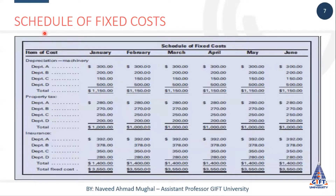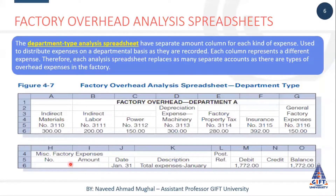This is a format for a factory overhead analysis sheet of department - is ko hum department wise create karte hain. Hum ne ek baat ki thi schedule of fixed cost. Kuch cost jo hoti hain jo ke hamari fixed cost hoti hain aur other factory overheads hoti hain, woh ya to invoices se aate hain, ya phir hum log usko fixed cost ke schedule se record karte hain. Jaise hum ne yahan pe miscellaneous factory expenses ki - jab bil hamare paas aya toh hum ne us ki entry ki ledger account ke andar, aur doosari us ki distribution jo thi woh different departments mein kar di.